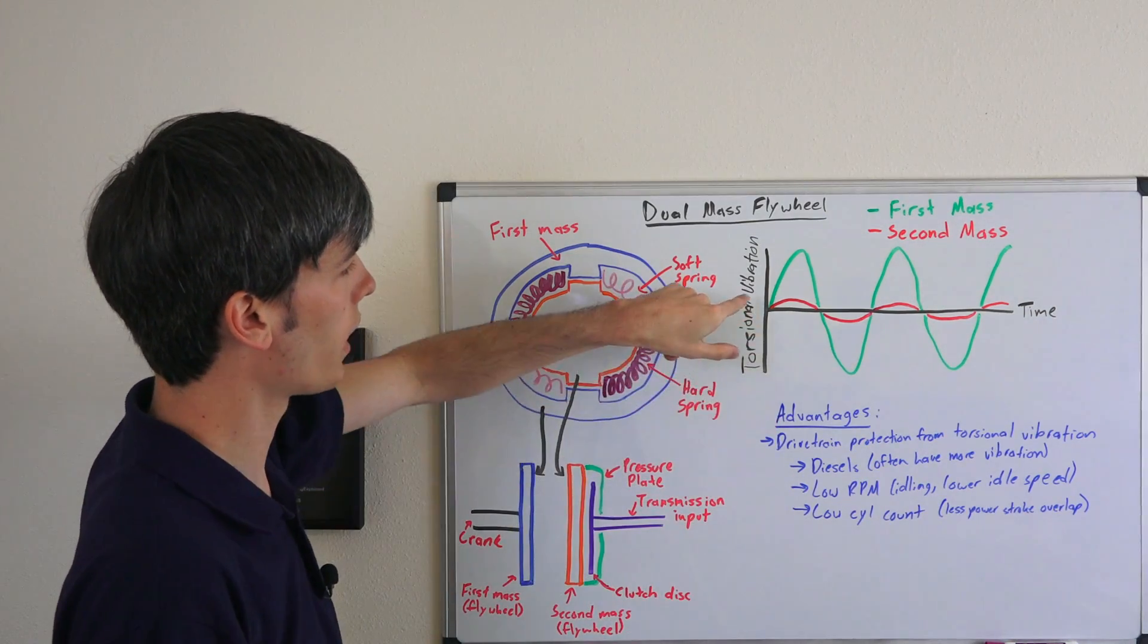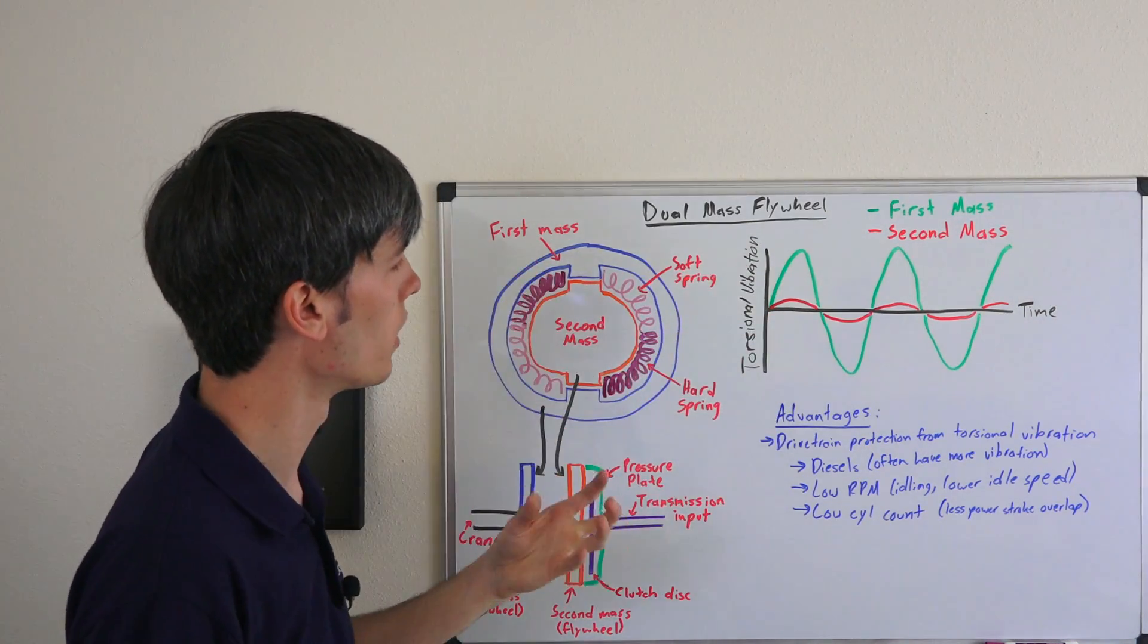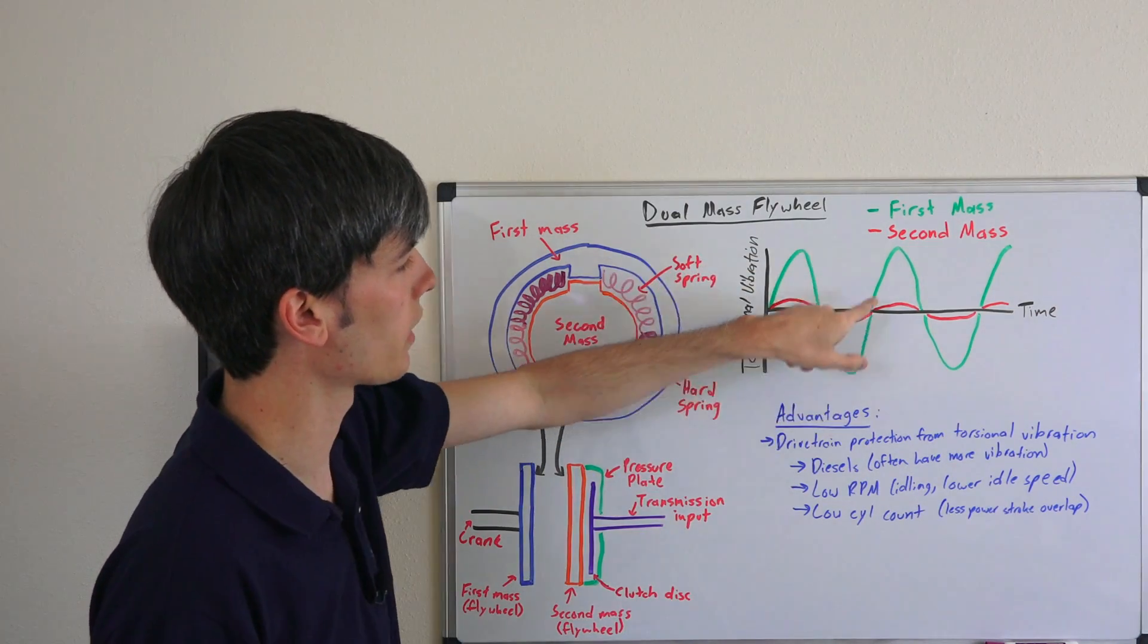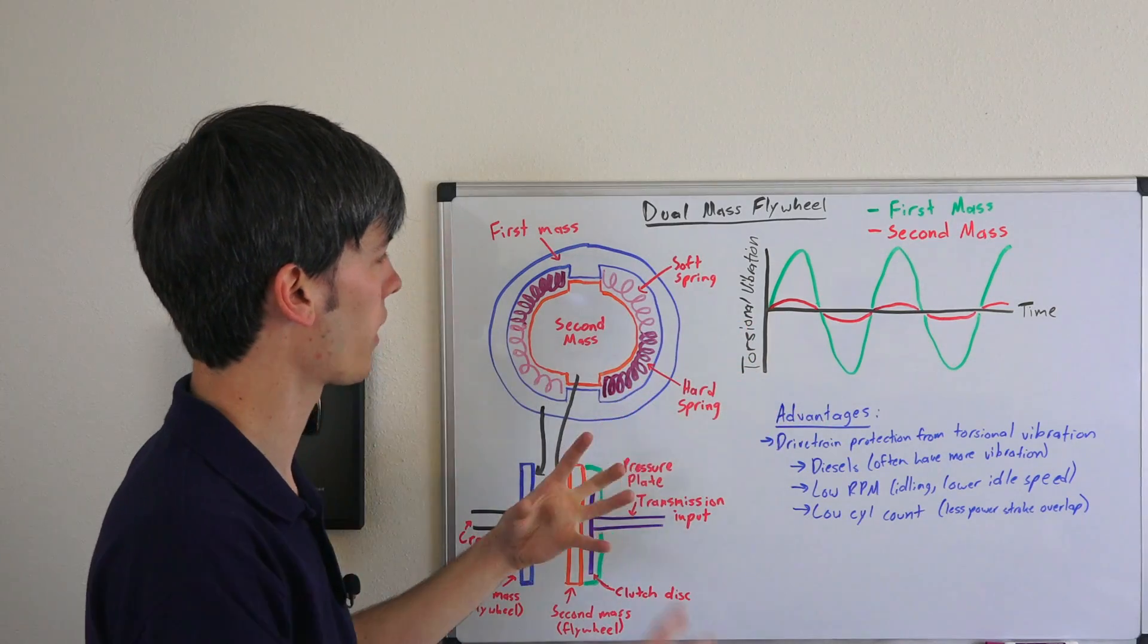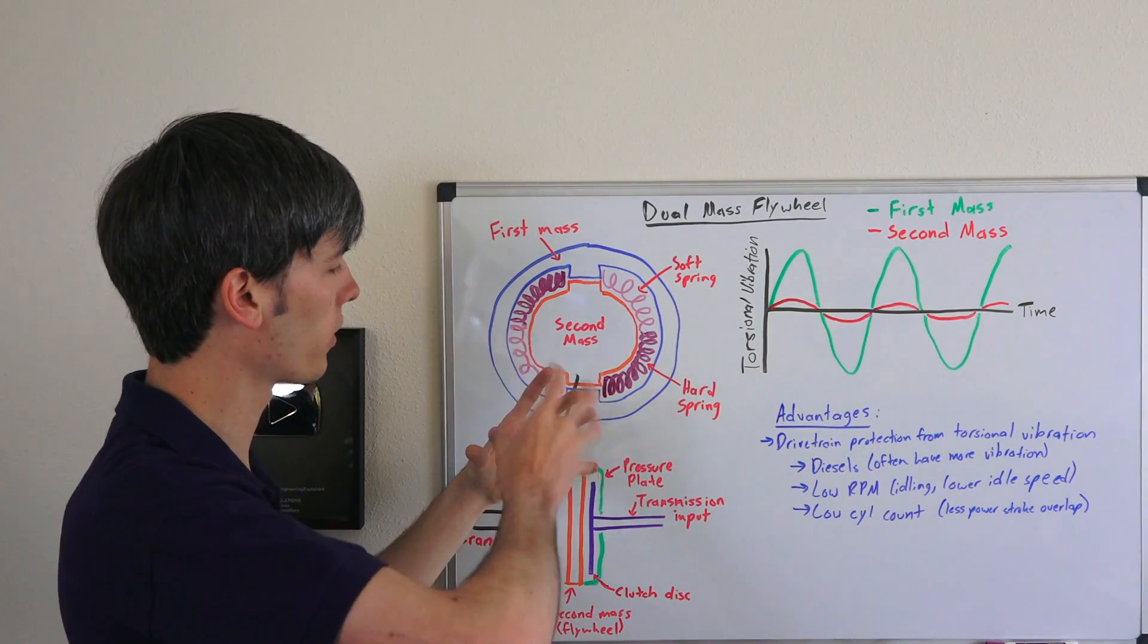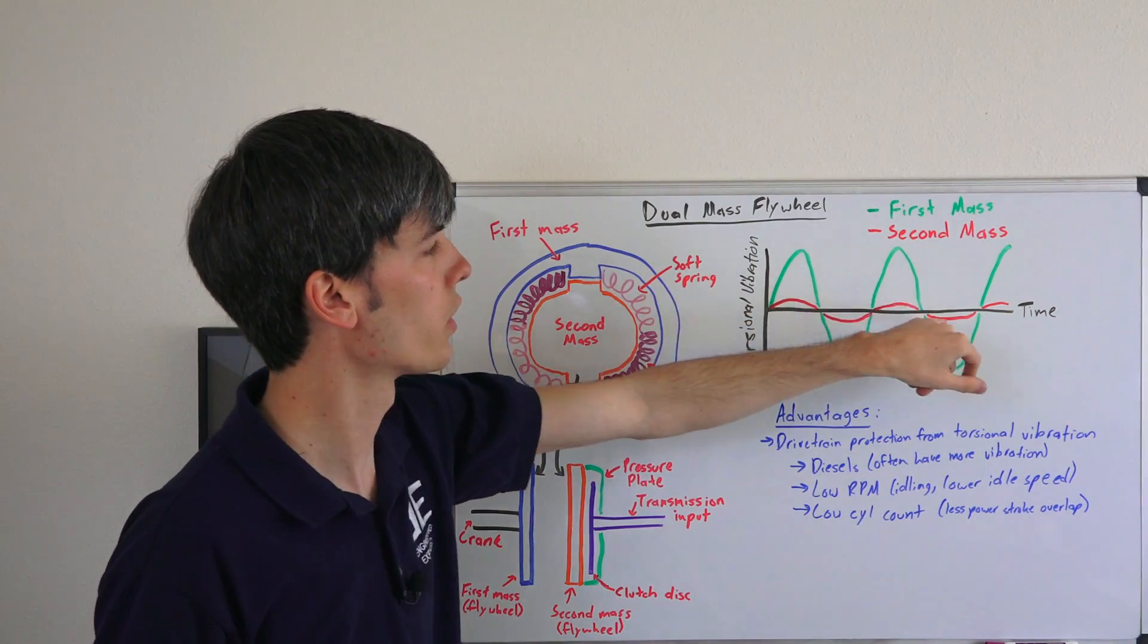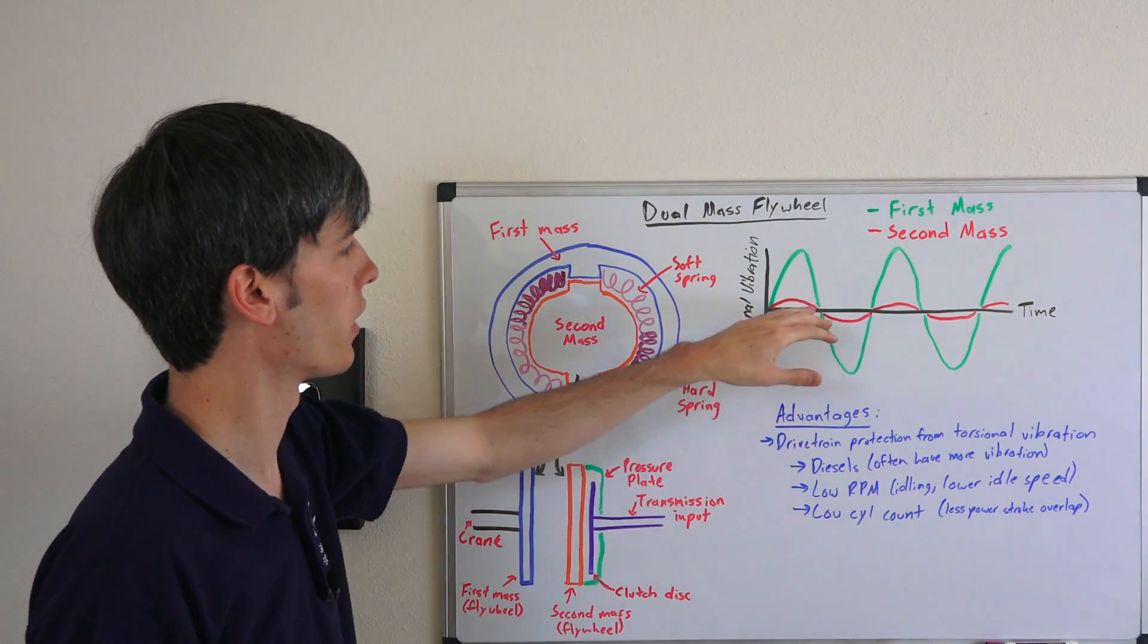These vibrations are what's hitting the flywheel and it has to absorb that vibration. So the first mass will look something like this, and then because the second mass has those springs that are absorbing some of that energy and kind of oscillating back and forth, you won't get as much through the second mass as far as vibration.